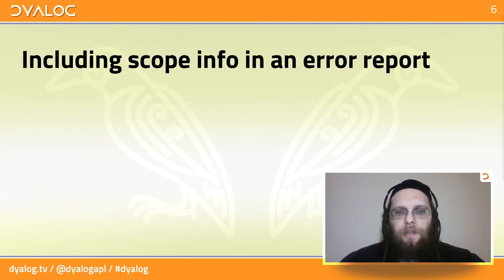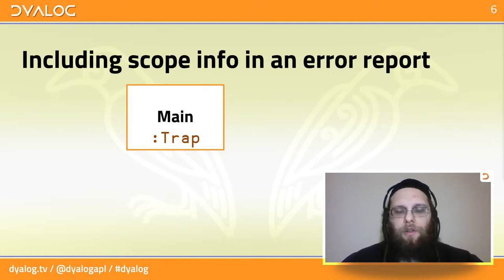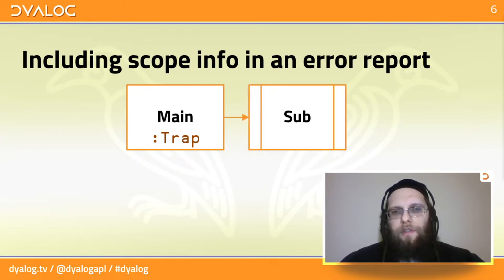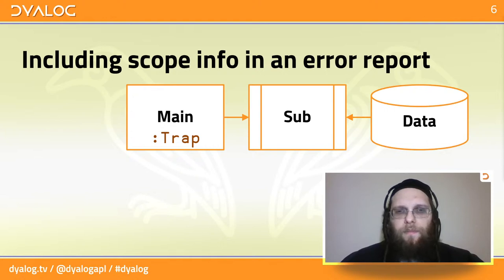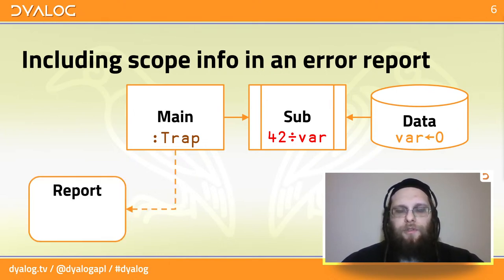Another thing we're going to look at today is if you have a large application. Let's say it calls some utility function inside a global trap that it has set. And that utility function accesses some data. Now there is a fault in the data which causes an error in the sub function. Execution is then transferred back to the trap in the main function and it hands off to an error reporting tool that say sends an email to you as the developer or stores some debugging information somewhere.